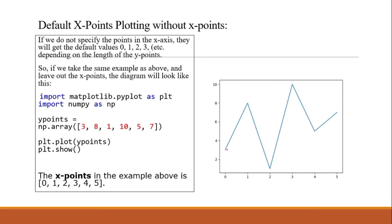You can also plot with only y-points, without explicitly providing x-points: plt.plot(y_points) — where y_points might be [3, 8, 1, 10, 5, 7]. The x-values will be assigned automatically, and it will show you a graph based on those y values.